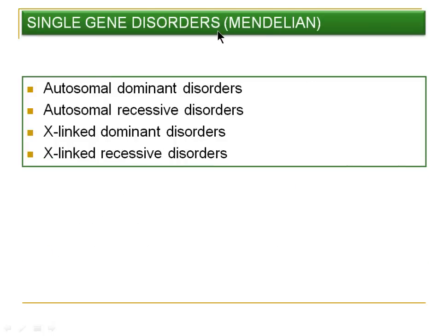The single gene disorder, also known as Mendelian Disorder, is based on two different locations: it may be present on autosomes or on sex chromosomes. In the autosomal form it may be dominant or recessive; similarly, in the sex-linked form it may be dominant or recessive. This gives four categories: autosomal dominant, autosomal recessive, X-linked dominant, and X-linked recessive disorder. In this lecture we will particularly focus on autosomal dominant disorder.